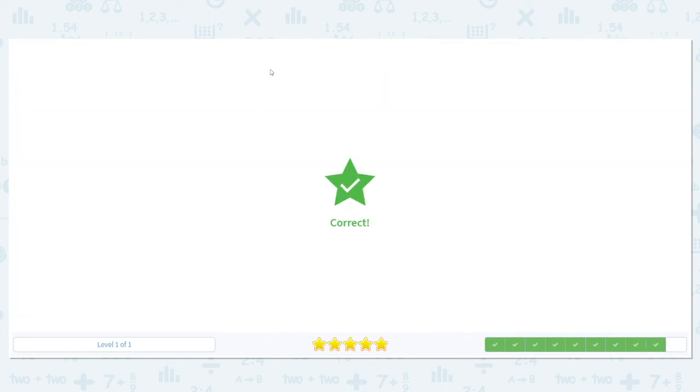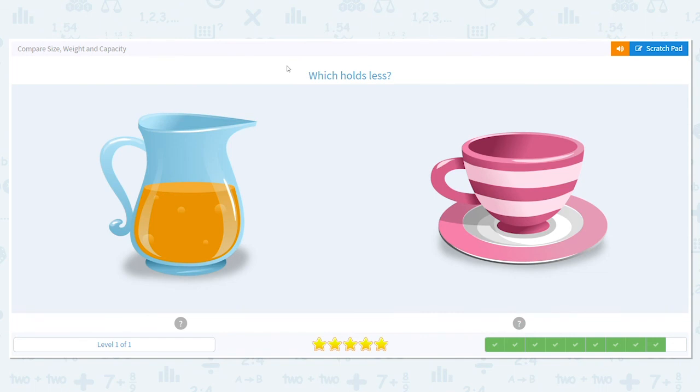Let's do one more. Which holds less? So, we're talking about capacity. If I have a pitcher and a teacup, which one would hold less juice or tea? Well, a teacup is normally small. It's tiny. And you put a little bit of drink in it. A pitcher is used to fill other cups up, so it needs a lot in it. So, the one that holds less is the teacup.